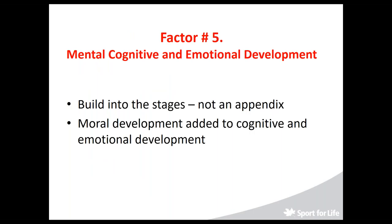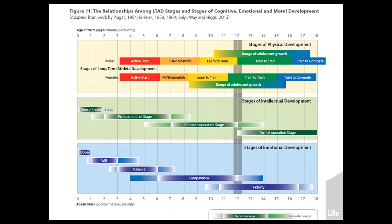Mental, cognitive, and emotional development: in LTE Day 2.0 you can find mental, cognitive, and emotional development laid out. The chart on top shows the stages of physical development, the middle shows stages of intellectual development, and the bottom shows the stages of emotional development. It is all well explained in LTE Day 2.0.